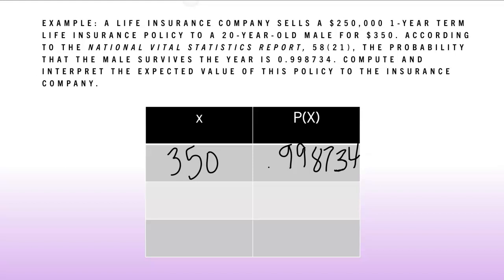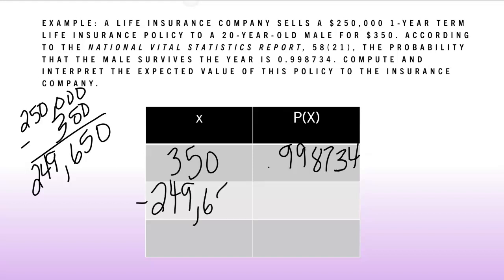Now the other outcome is if that man dies that year and I have to pay out $250,000. Now it would be negative $250,000, but I have to take into consideration that he did pay $350. So I would have to do $250,000 minus $350, which would give me $249,650. So if he dies, that's what I'll end up paying out, because the other $350 would be the money that he gave, right? Now, what is the probability of him dying? Well, the probability of him dying is one minus the probability of him surviving. So one minus 0.998734, which if you subtract that, equals 0.001266.